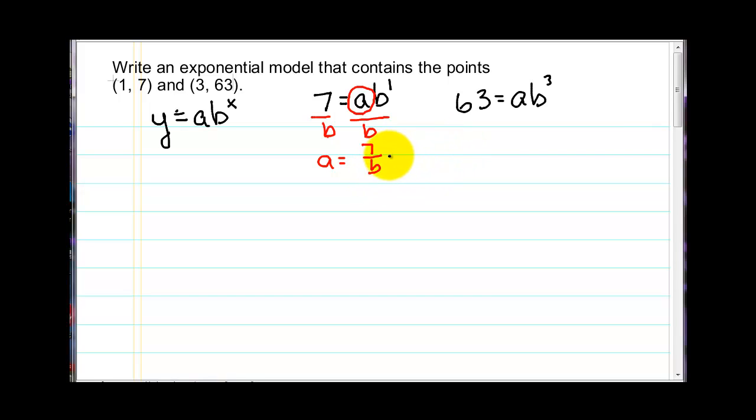And the substitution method, we now replace the a in the second equation with that value, creating a new equation that only has one letter. So we now have 7 over b, times the b cubed. Now we have an equation with one letter, and we have algebraic methods for solving that.